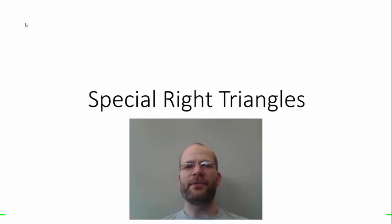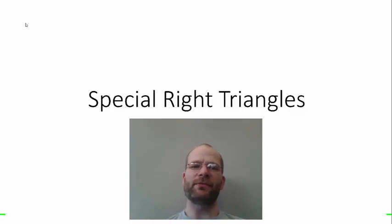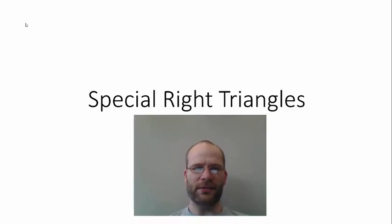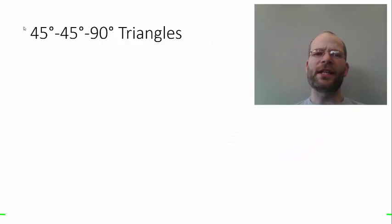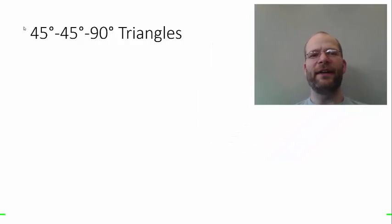Mr. Picard with another geometry video. Today we're talking about special right triangles. The first kind of triangle we'll talk about is called a 45-45-90 triangle.